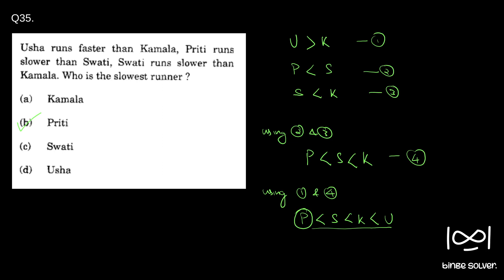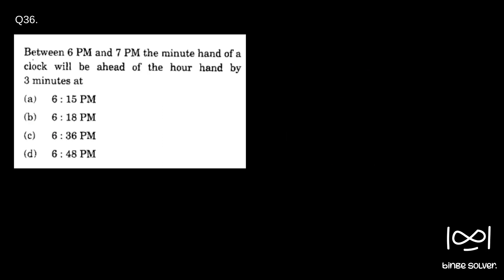Moving on to the next question — Question 36. Between 6 p.m. and 7 p.m., the minute hand of a clock will be ahead of the hour hand by three minutes at what time? Four options are given.